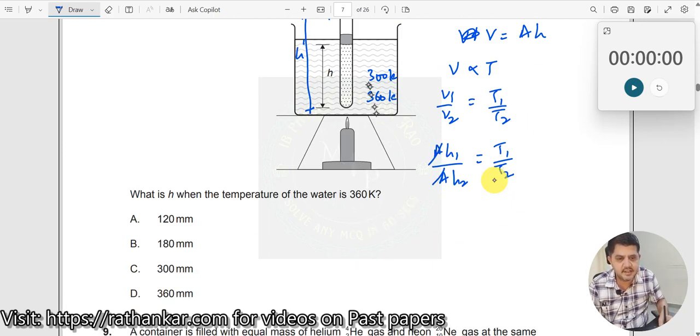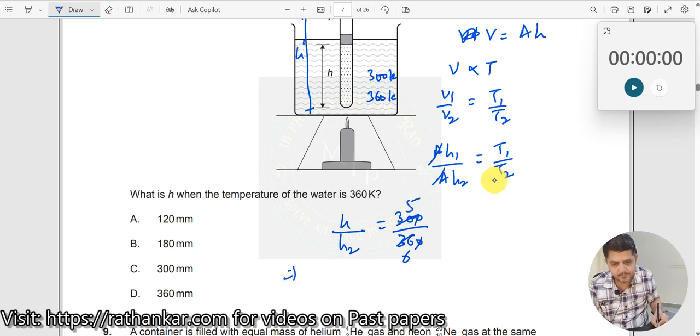Now what is H1? H1 was initial which should be H divided. What is H2? I do not know. Is equal to, what is T1? T1 is 300 divided by T2 360. This goes away. So 6 are 36, 6 5 is 30. So therefore, H2 should be equal to 6H divided by 5.